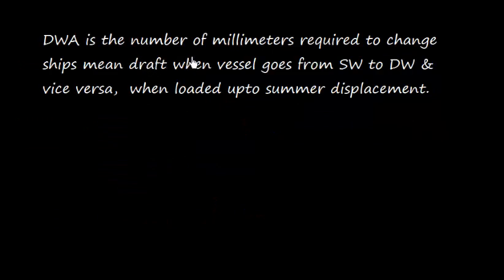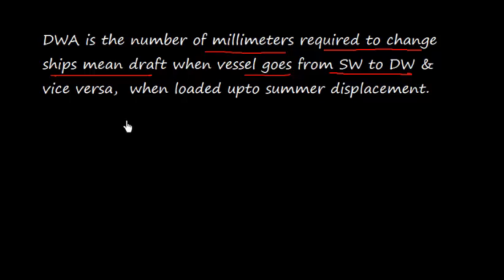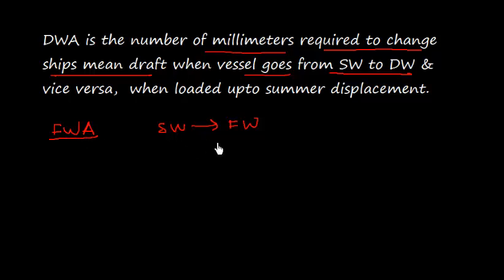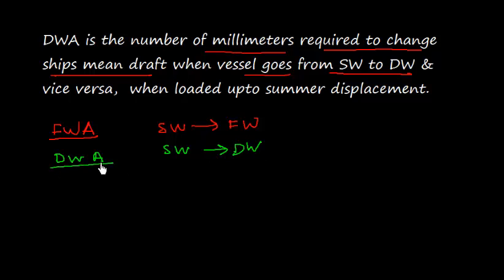We can define dock water allowance as the number of millimeters required to change the ship's mean draft when the vessel goes from salt water to dock water and vice versa, when loaded up to summer displacement. In case of fresh water allowance, the vessel goes from salt water to fresh water. However, in case of dock water allowance, when the vessel goes from salt water to dock water and vice versa, the change in mean draft is called dock water allowance.